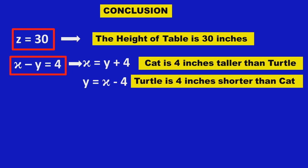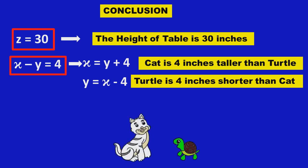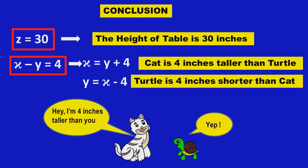So we can't find the individual heights of the cat and the turtle from the given information — we can only find the relationship between them. Thank you viewers, bye-bye.